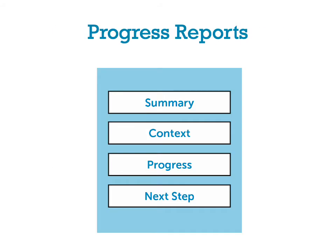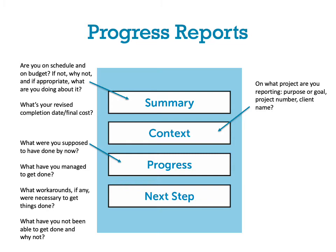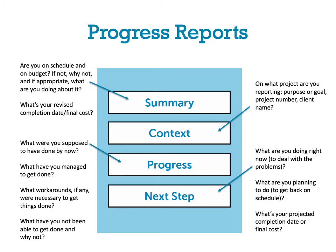Next, we have progress reports. Are you on schedule and on budget? If not, why not, and what are you doing about it? What's your revised completion date and final cost? For context: what project are you reporting on, your purpose or goal, project number, client name. Then your actual progress: what were you supposed to have done by now, what have you managed to get done, what workarounds were necessary, and what have you not been able to get done and why? Next, what are you doing right now to deal with problems, and what are you planning to do to get back on schedule? If you're working in any kind of business doing projects, chances are you'll have to do progress reports, so this is a good one to familiarize yourself with.